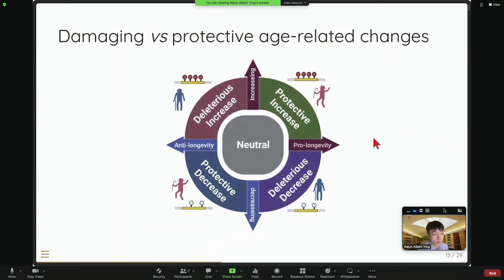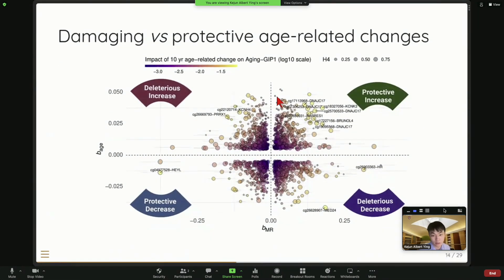So now, as we have this causal effect estimated, now we can assess which methylation change are damage and which of them are protective. So imagine we put the estimated causal effect of the DNA methylation site on x-axis and age-related change on y-axis. And now they will separate all the methylation site and methylation change in this four quadrants.